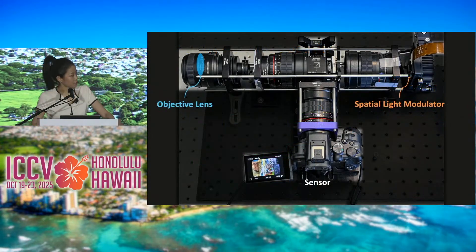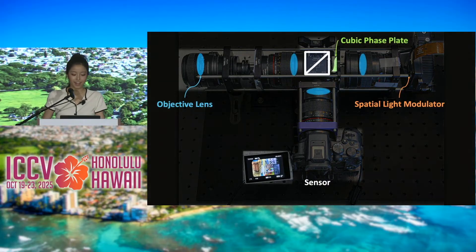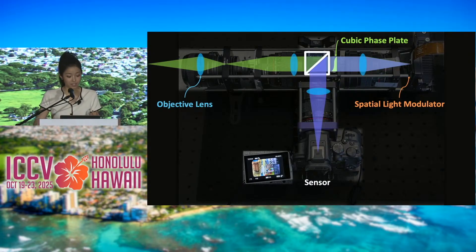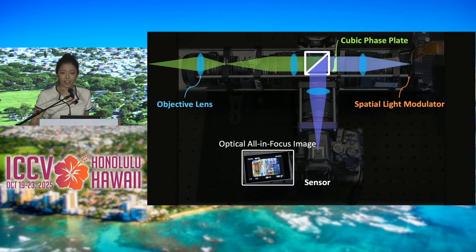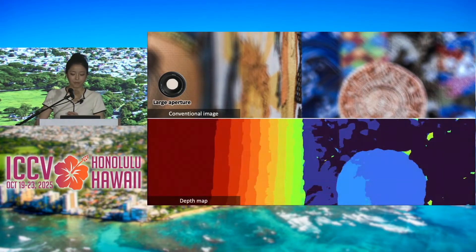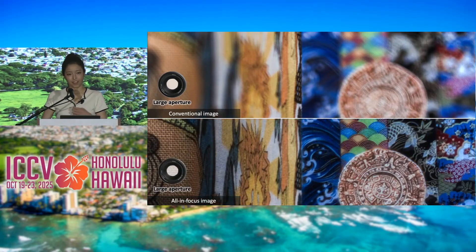Our prototype folds the optical path using a beam splitter. Light enters the objective lens, reflects from the SLM, and hits the sensor. The result is a spatially focused programmable camera that can optically capture an all-in-focus image, even when the scene is highly non-planar. Compared to a conventional camera that would blur much of the scene, for any scene in the wild, when given a depth map, we can program the lens to spatially vary its focus and capture an all-in-focus image.